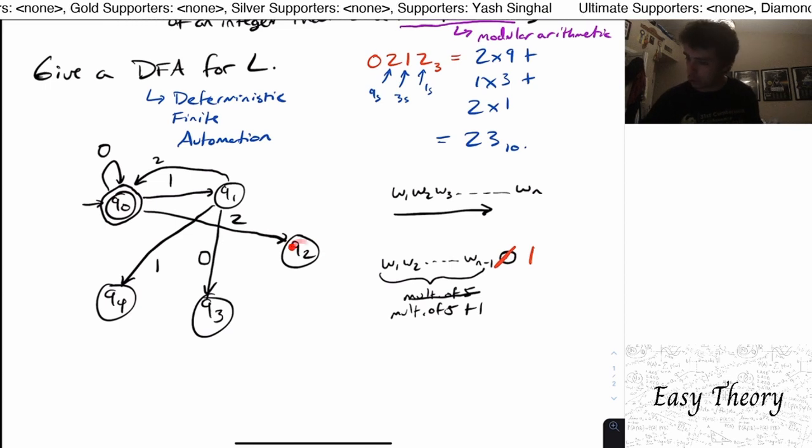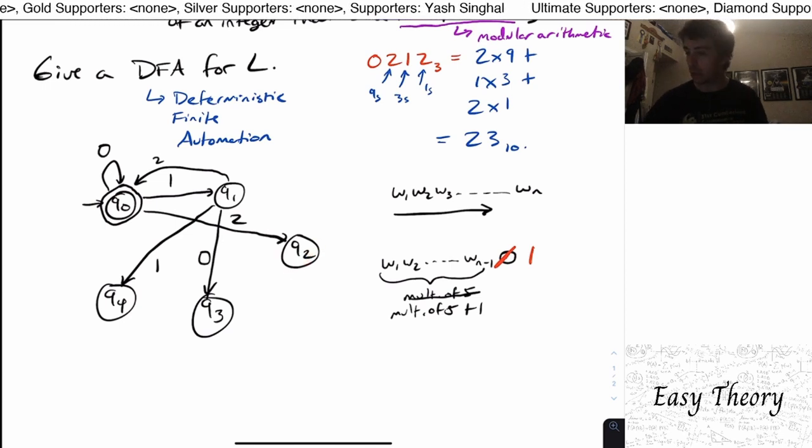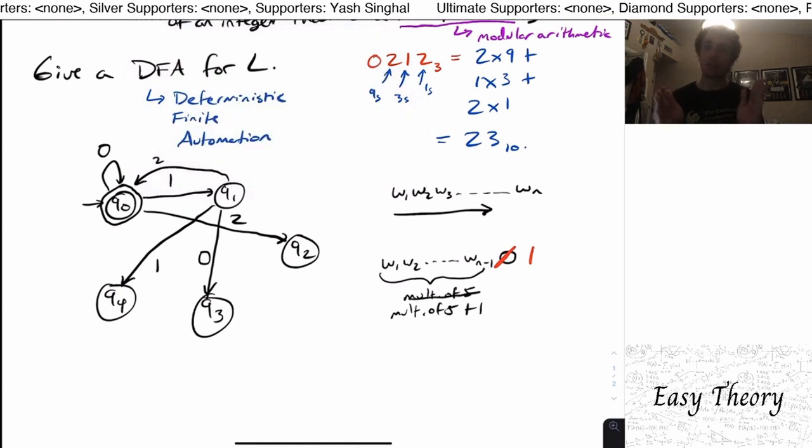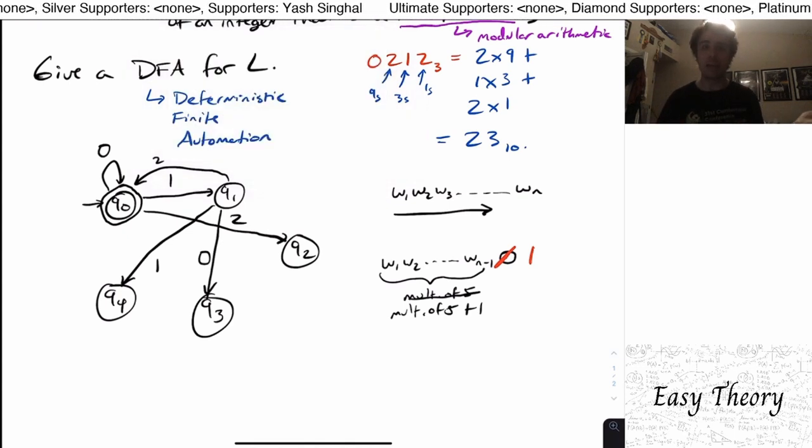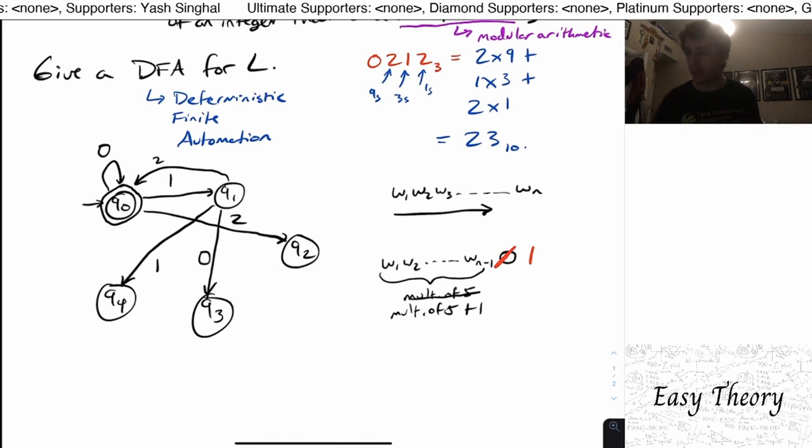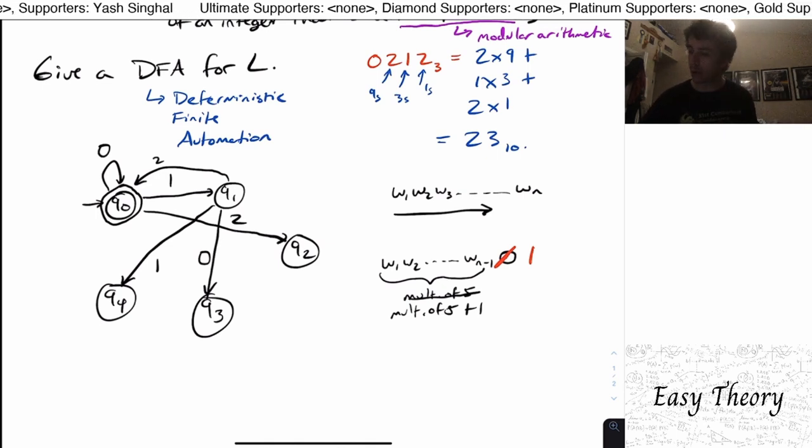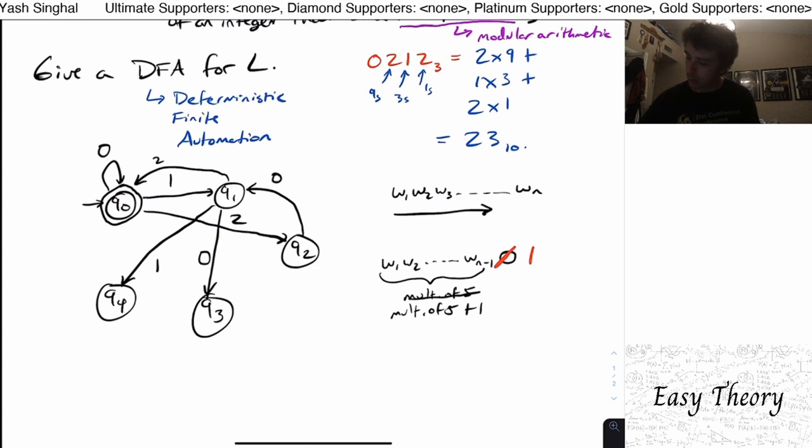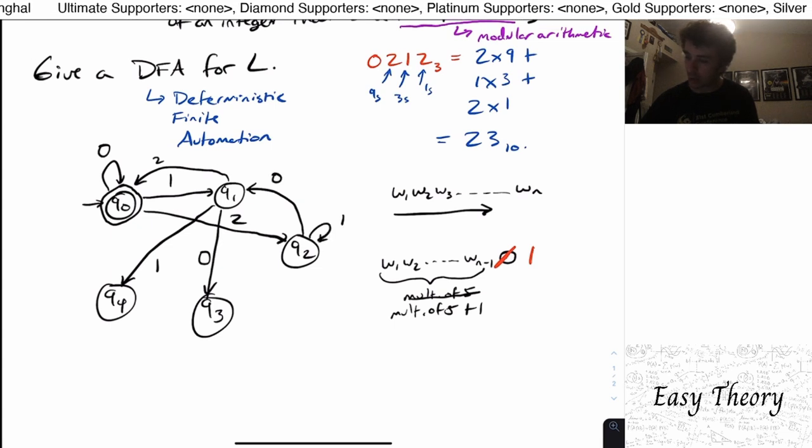So now let's do the 2 transition, I mean q2. So on input 0, well if we had a remainder of 2, multiply by 3, that gives us 6, and now reduce it by 5, so now we get 1. So 6 minus 5 is 1. So the 0 transition goes here, the 1 transition must go here then, and then the 2 transition must go here.